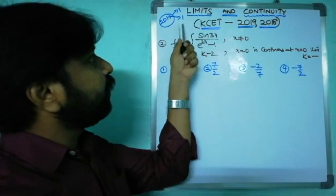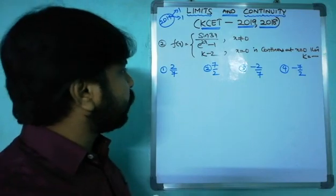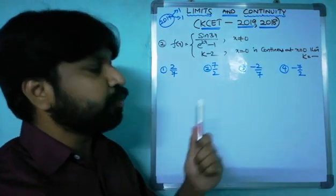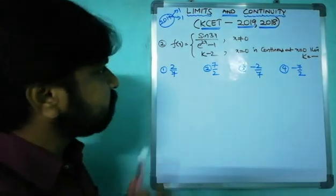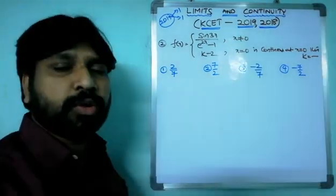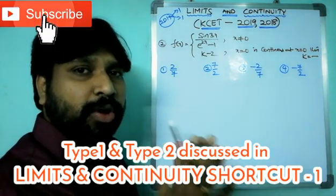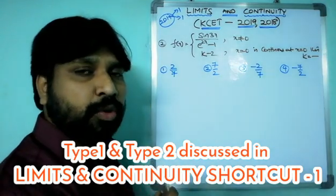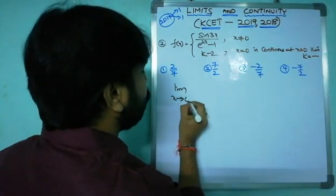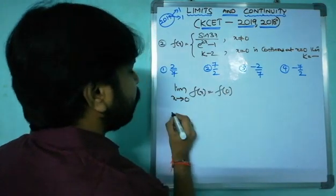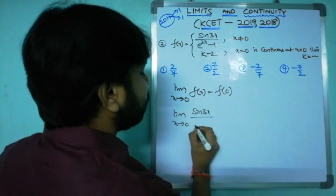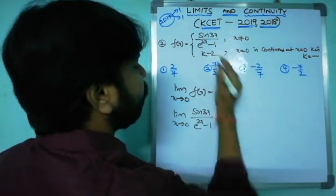From the continuity topic in 2019: f(x) = sin(3x)/(e^(2x) - 1) for x ≠ 0, and k - 2 for x = 0. If f is continuous at x = 0, find k. This is Type 2 — when x = 0 is the point, we don't need left and right limits separately; we write limit x→0 f(x) = f(0), so limit x→0 of sin(3x)/(e^(2x) - 1) = k - 2.